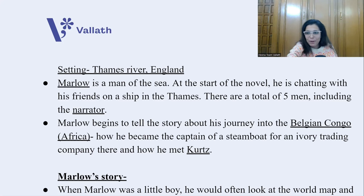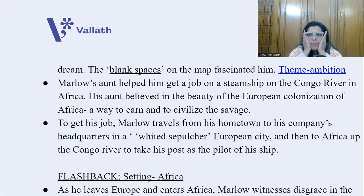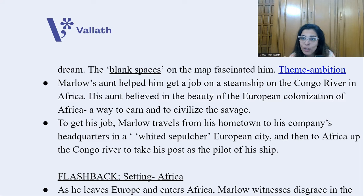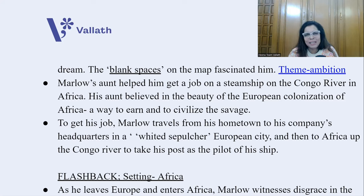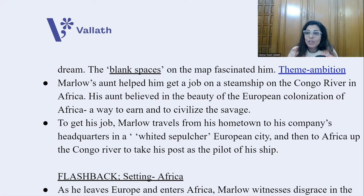Marlow's story flashes back to when he was a little boy. He would look at the world map and dream — he was curious to travel, which is how he became a man of the sea. The blank spaces on the map — that is, Africa, the land not yet fully discovered — fascinated him. The theme here is ambition and curiosity. Marlow's aunt, a very social woman with influence, helped him get a job on a steamship on the Congo River. She believed colonization of Africa was a noble way to civilize the so-called savages.